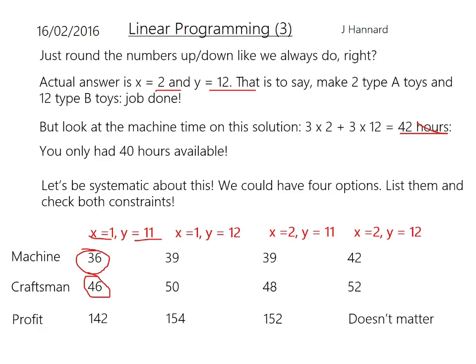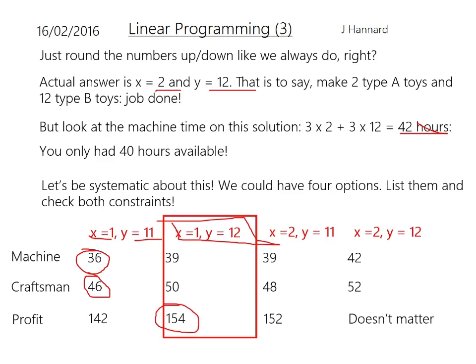Out of these three valid options, which gives the most profit? It's obviously £154. So I advise the manufacturer to make one type-A toy and 12 type-B toys. Nice big red box around it — that's your answer.